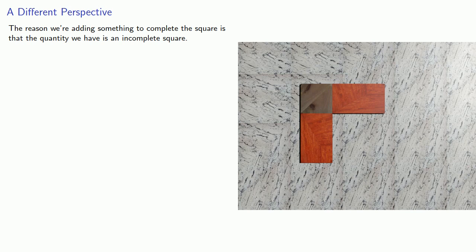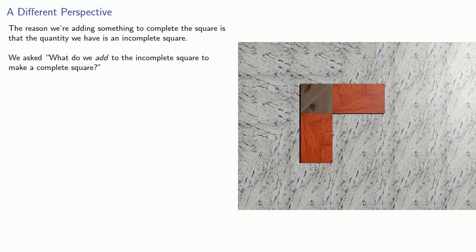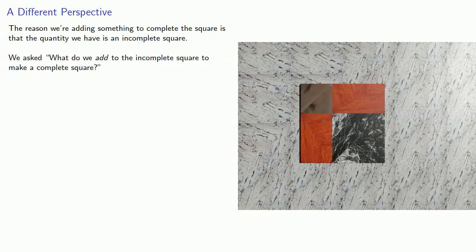Well, let's take a different perspective. The reason we're adding something to complete this square is that the quantity we have is an incomplete square. And so we asked, what do we add to the incomplete square to make a complete square? Well, let's change things up.